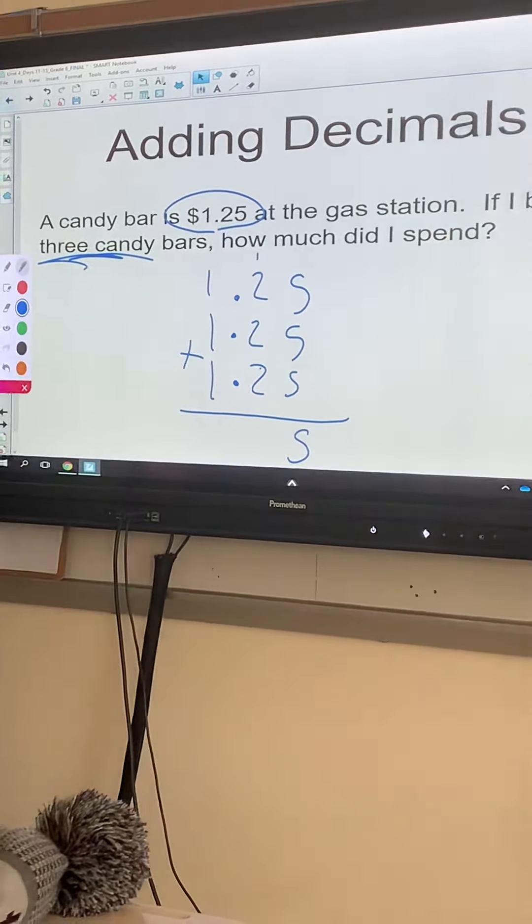how much did they spend? We've got two pounds of Starburst, one pound of Twizzlers, adding up three things. Starburst is the first one. We need another Starburst. And lastly, we've got one pound of Twizzlers at $1.25.